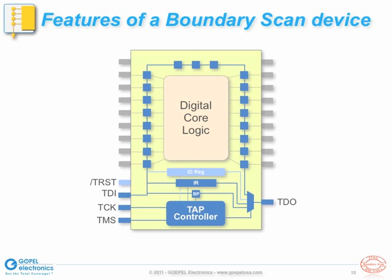In addition to the four mandatory TAP signals, an optional fifth signal — a low-active Test Reset (TRST) — can be implemented. The test reset pin can be used to asynchronously reset the test logic implemented in the device. If the device does not include a TRST signal, the test logic is reset by the TAP controller.